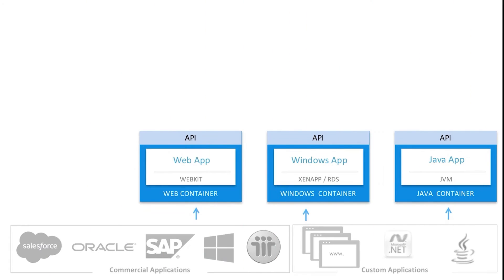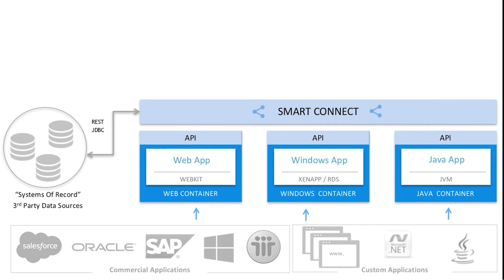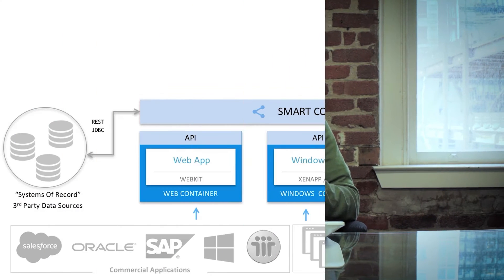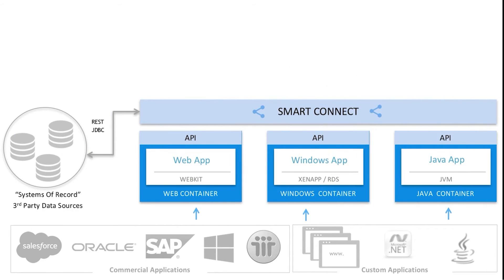Once we've wrapped these applications in a container, we use our Smart Connect API to access them. This is where we use our machine learning to recognize the components of the application — the states of the application, the screens, the controls, all the different UI elements — and we use the APIs to extract those.